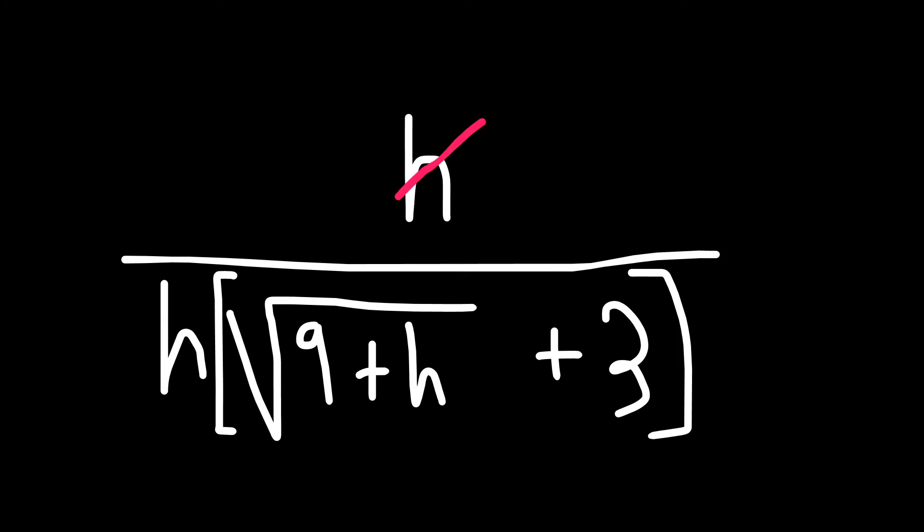But again, look, h and h will cancel off, and only a 1 will be left over. The bottom is the same. So that means the following then at the end.